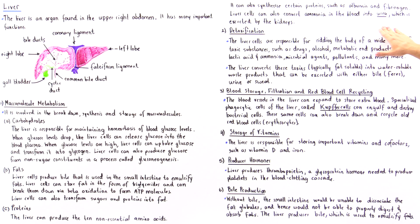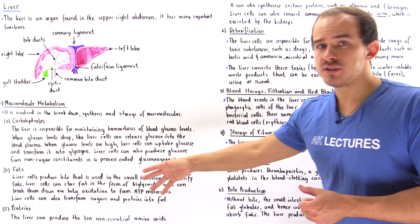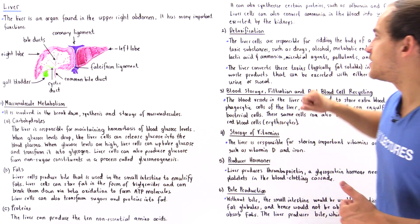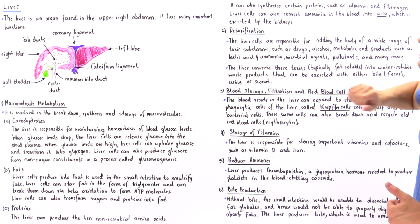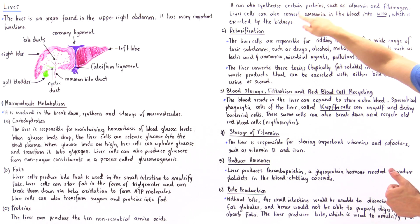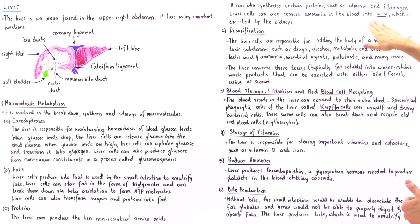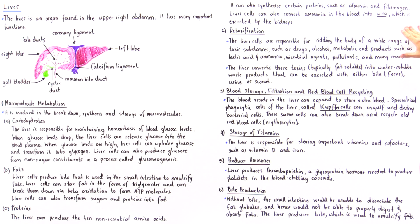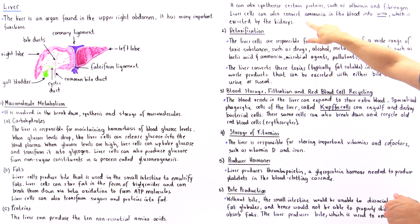Finally, in terms of protein metabolism, liver cells can also convert ammonia in the blood into urea, which is then excreted by our kidneys.